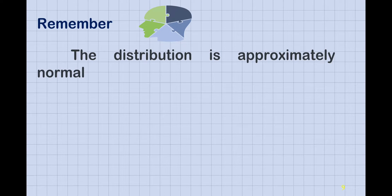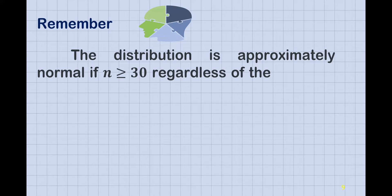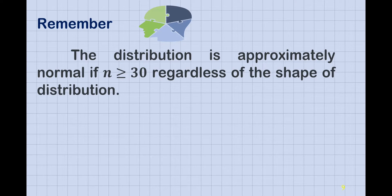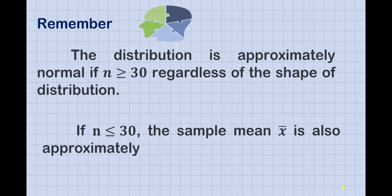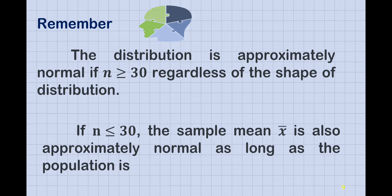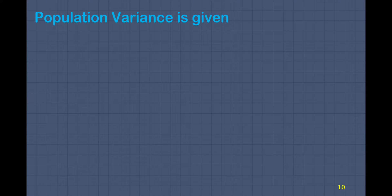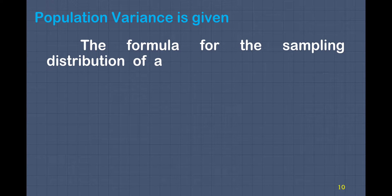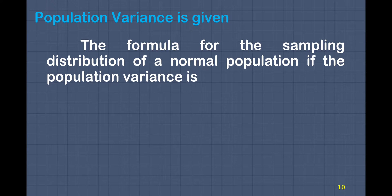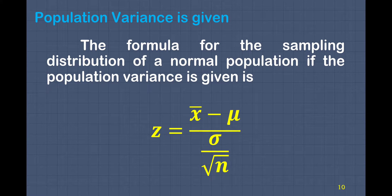Remember that the distribution is approximately normal if n is greater than or equal to 30, regardless of the shape of the distribution. And if n is less than or equal to 30, the sample mean is also approximately normal as long as the population is normally distributed. The formula for the sampling distribution of the normal population, if the population variance is given, is the same as finding the value of z under the Central Limit Theorem.